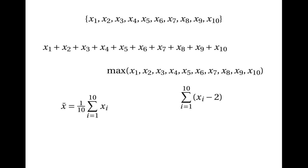And if we look at the sample mean — the mean of the numbers in the sample, which you get by adding them all together and dividing by how many there are — you get a statistic. And if we look at the sample variance, which is defined like this, you get a statistic.